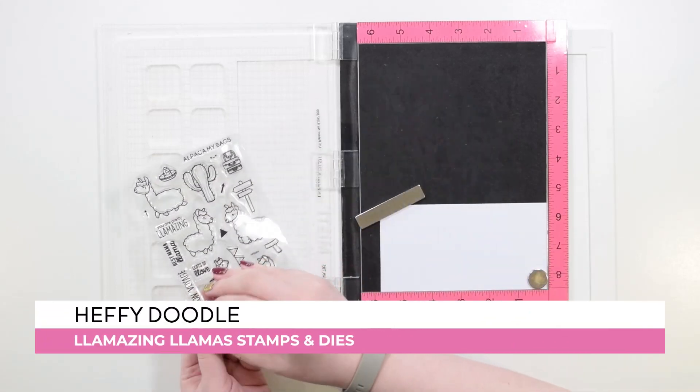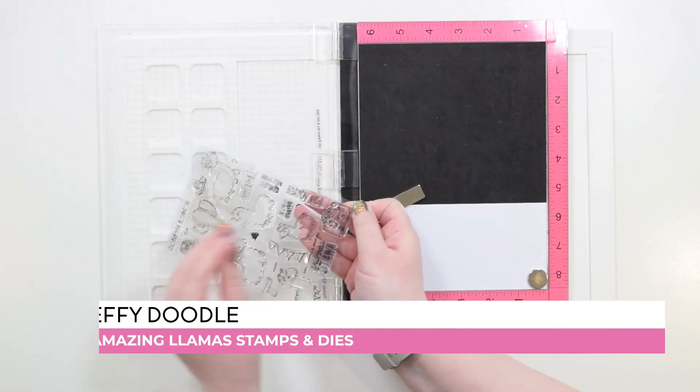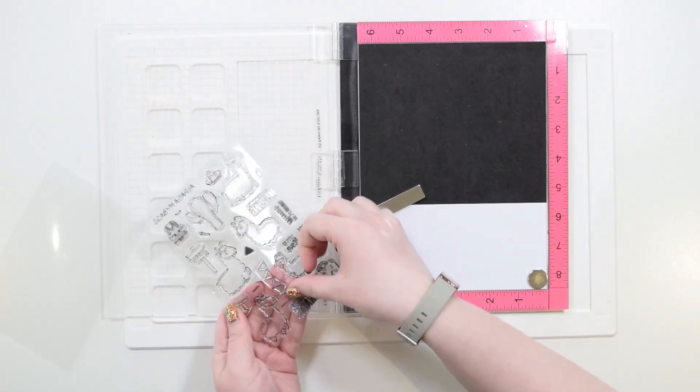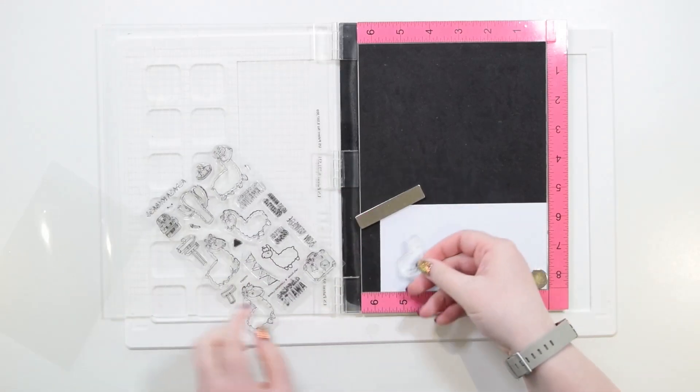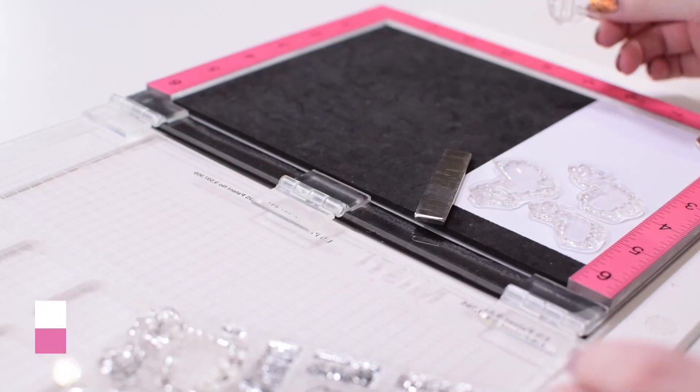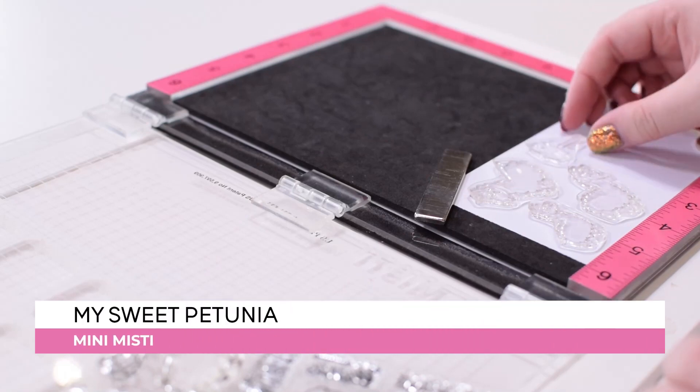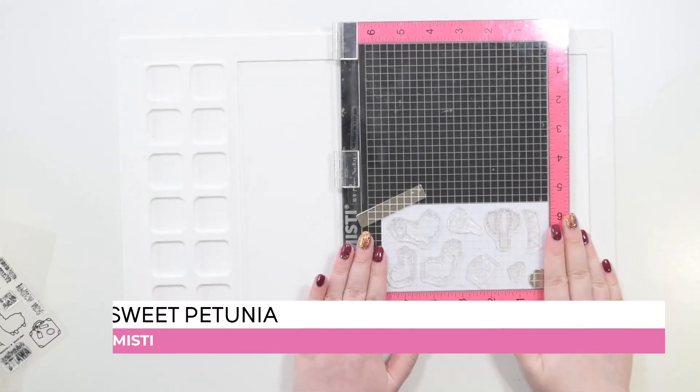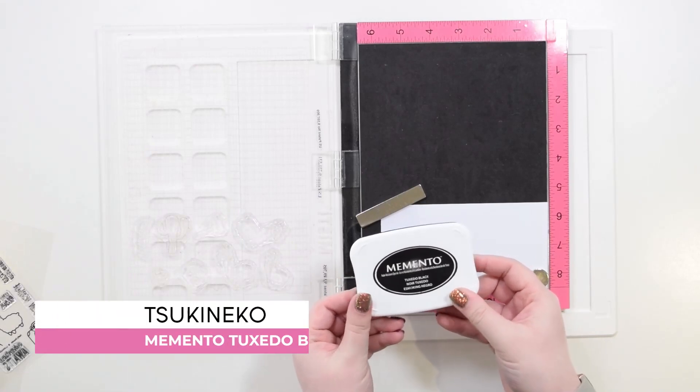Here is the Amazing Llama stamp set. It has these super cute, super fluffy llamas or alpacas and some wonderful accessories for them. So I'm using my MISTI to help me position these on my alcohol marker friendly cardstock.